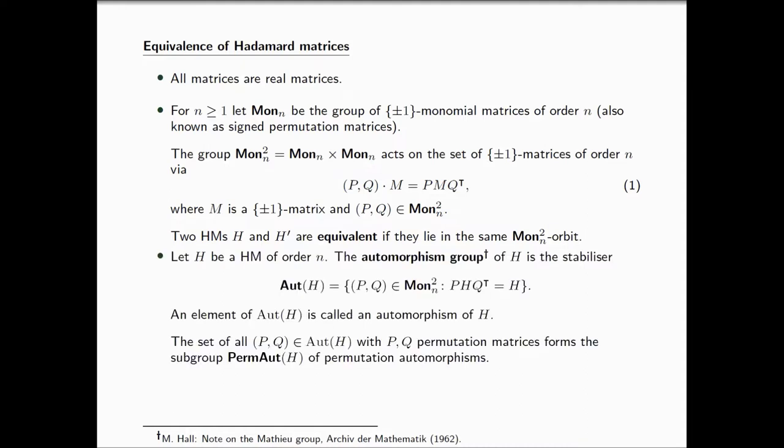An advantage of presenting things this way is that the automorphism group of a Hadamard matrix H is precisely the point stabilizer under this action. If we look at all the automorphisms whose components are actually permutation matrices, that forms a subgroup of the automorphism group, which we call permote. This is a distinguished group that I'm going to use later for a characterization of cocyclic Hadamard matrices, so please keep it in mind.